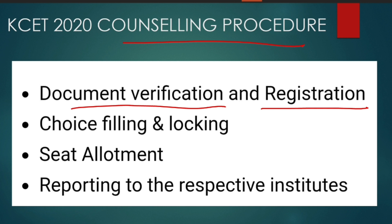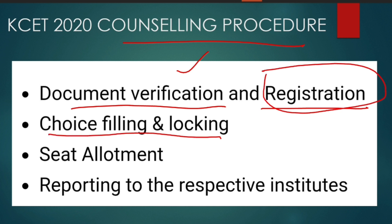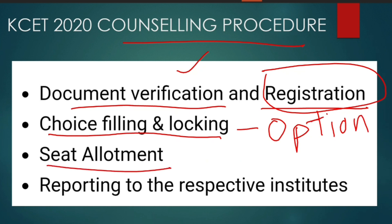So the documents are uploaded. Click on 'add document.' You will get the registration key. You will put this in the same way. You will get to choice filling and locking — you will have the option entry. This is the key part now. So you will have the next seat allotment and the reporting at the respective institution.